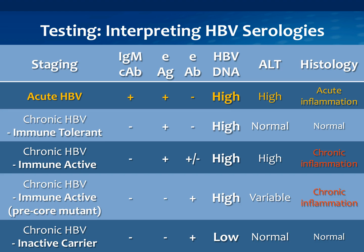I want to go over the serologies because this is an area of confusion. Commonly ordered tests are: E antigen, E antibody, IgM core antibody, HBV DNA, and ALT. In acute hepatitis B, patients have a positive IgM, positive E antigen, a very high viral load, and typically high ALT. These people are very contagious and you really want to watch that they're not spreading it. On biopsy, they show acute inflammation.